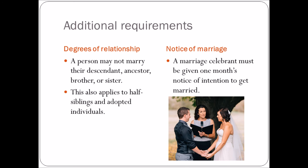Degrees of relationship: you can't marry a descendant, ancestor, brother, or sister. So siblings, children, and parents are all out. This applies to half-siblings and adopted individuals, but not step-parents and step-children — unless the step-parent adopts the step-child, in which case marriage between them will never be allowed.